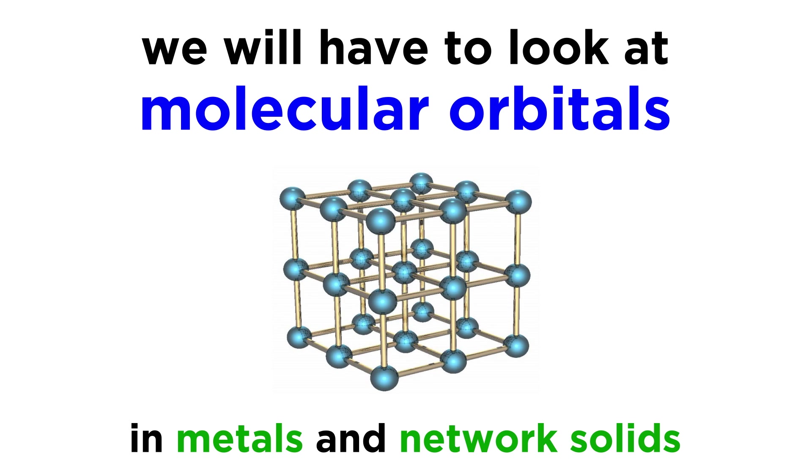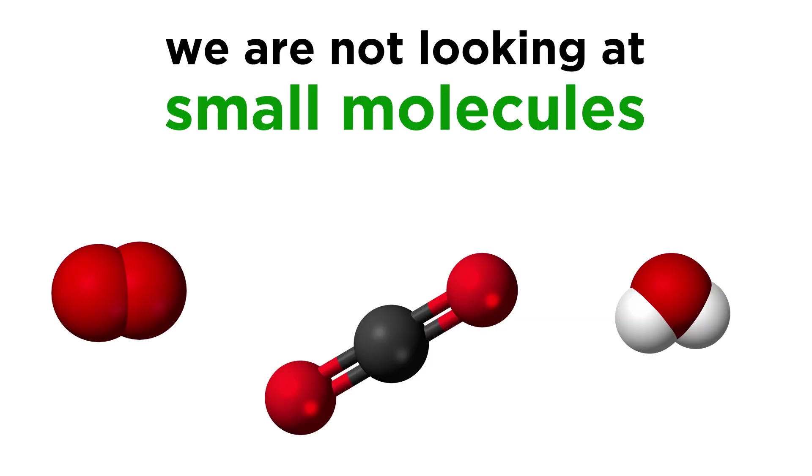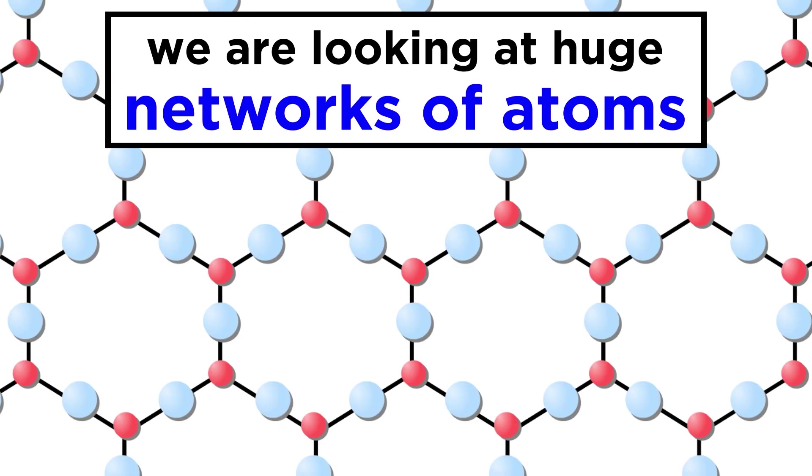The explanation for the conductivity of these substances requires that we look at molecular orbitals in metals and network solids. If you need to review this concept, check out my tutorials on molecular orbital theory first. Otherwise, to put things into perspective, we must understand that these materials are not small molecules comprised of a handful of atoms. These are huge arrays of a particular atom or repeating formula unit, stretching endlessly in every direction.